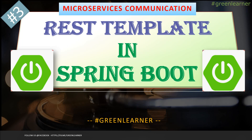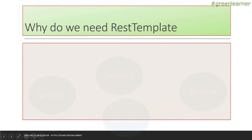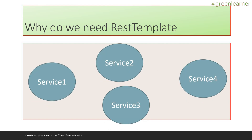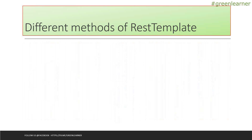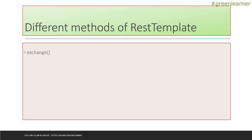Hey everyone, this is the next video in the series about microservices communication using REST template. So far we have looked into why we need REST template — when there are multiple services, they need to be enabled to communicate with each other. We are using REST template to enable that communication, and we have seen there are different methods in REST template. The first one is exchange, which we have finished and understood.